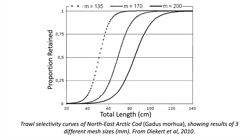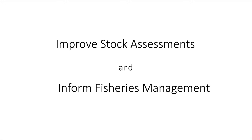Selection curves are important as the use of any fishing gear introduces some degree of bias into the fish stock assessment, due to the different availabilities of different species, sizes, or ages of fish to the gear. It's also important to inform fisheries managers on the selectivity of commercial gear types. Therefore, by understanding the selectivity of different gears, we can improve stock assessments and provide better advice to fisheries managers.